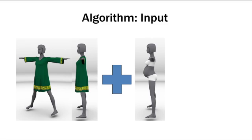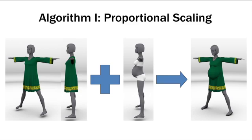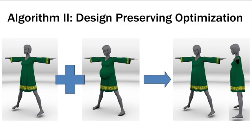We now briefly describe the stages of our method. The input to our method is a dressed source character model and a target character. We first employ a skinning-like initialization that generates a proportionally scaled reference garment. We use the proportionally scaled garment as an initialization for design-preserving optimization which aims to keep the shape of the source garment while maintaining proportionality and fit. Details are in the paper.